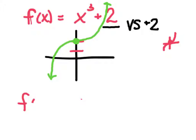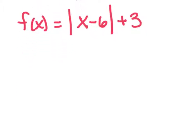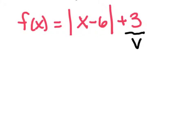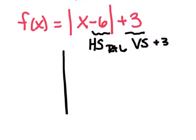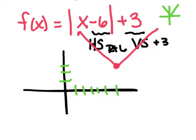F of x equals the absolute value of x minus 6 plus 3. The 3 is outside, so that is a vertical shift of 3. The 6 is inside, so this is a horizontal shift — and remember it does the opposite, so I'm actually going right 6. So I go right 6 and up 3, and make my new point. Absolute value makes a V shape, and it is centered at the origin. I moved it right 6 and up 3, and draw a nice V.